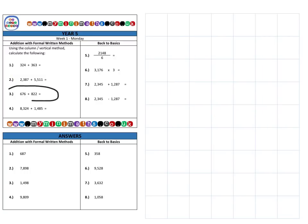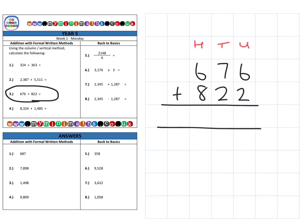Next we're on to question three. So that's 676, and we're going to add 822. So again, we're back to just the hundreds, the tens, and the units. So first of all, let's add together the 6 and the 2, which gives us 8.